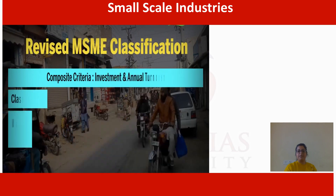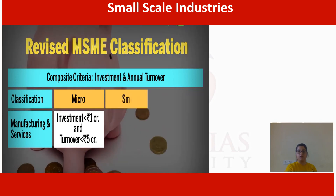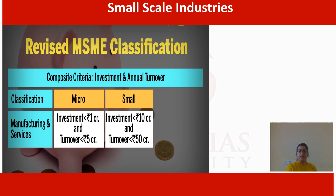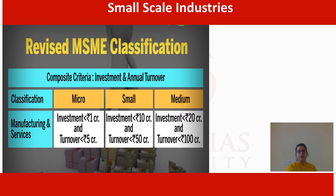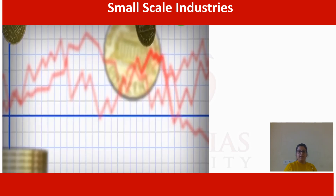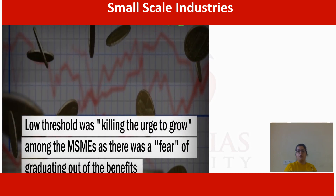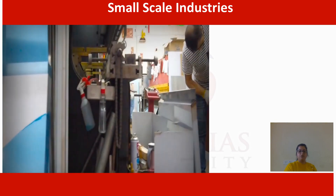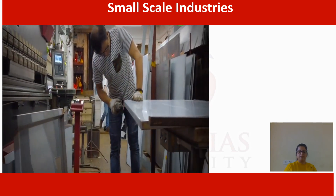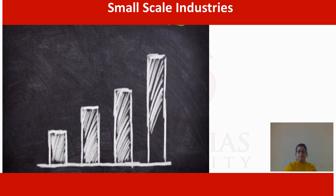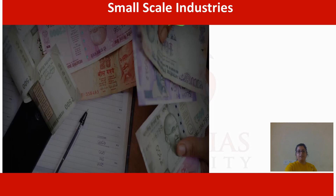The revised classification of MSMEs applies to both manufacturing and service sectors. For micro enterprises, the investment is 1 crore and the turnover is within 5 crore. For small enterprises, the investment is within 10 crore and the turnover is 50 crore. For medium enterprises, the investment is 20 crore and the turnover is 100 crore. The low thresholds were discouraging growth among MSMEs due to fear of graduating out of benefits. The new definition also includes a turnover criterion alongside plant and machinery investment.